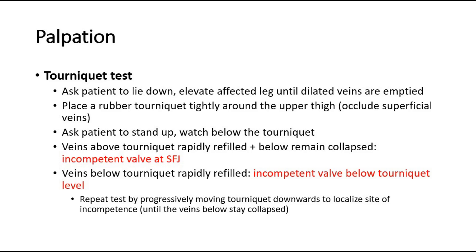After emptying the veins and asking the patient to stand, watch below the tourniquet. If the veins above the tourniquet rapidly refill but below remain collapsed, this suggests incompetency at the saphenofemoral junction. If veins below the tourniquet rapidly refill, it suggests incompetency at a perforator below the tourniquet. The test can be repeated by progressively moving the tourniquet downwards to localize the site of incompetency.